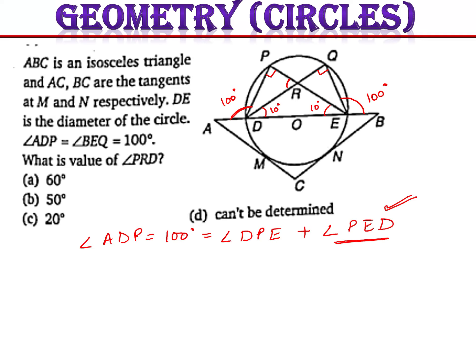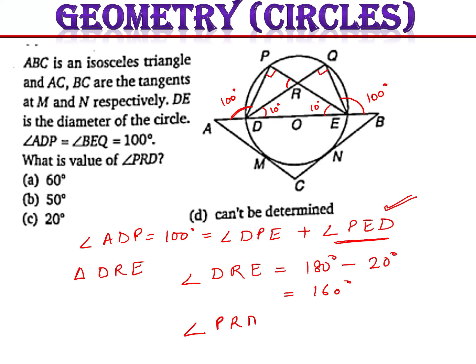Taking angle QEB as an exterior angle, I can find that in triangle DRE, angle DRE equals 180 minus 20, which is 160 degrees. Since angle PRD and angle DRE form a linear pair, angle PRD equals 20 degrees. The third option is the answer. I hope the question is clear to all.